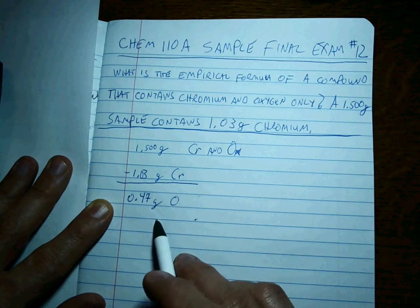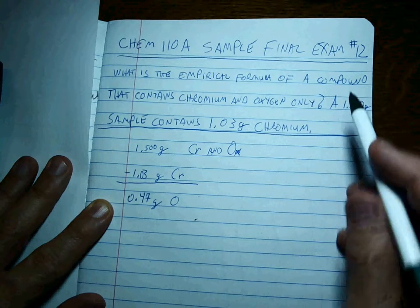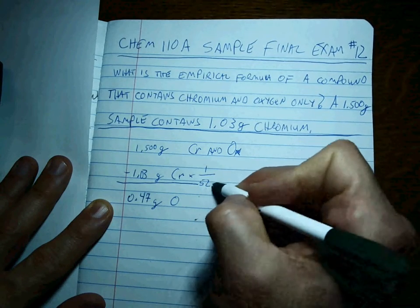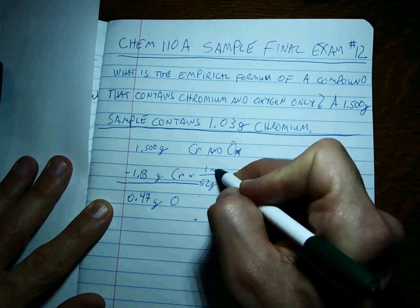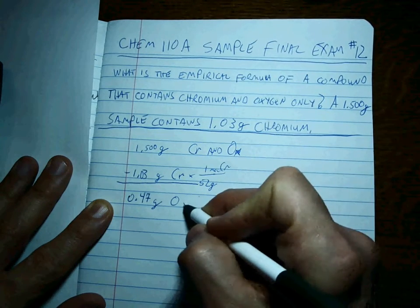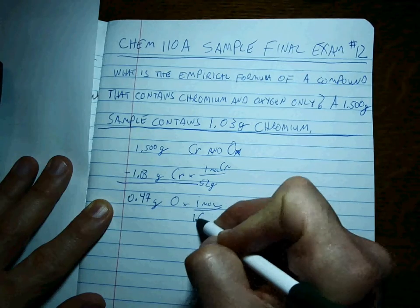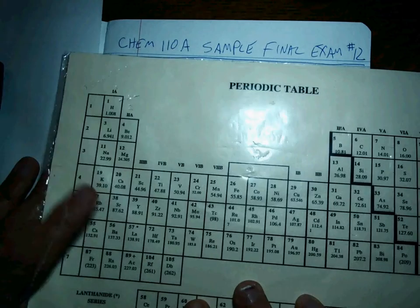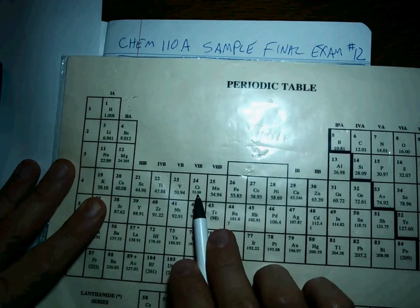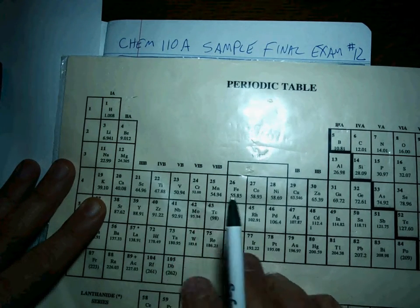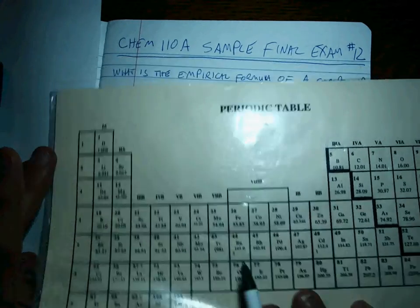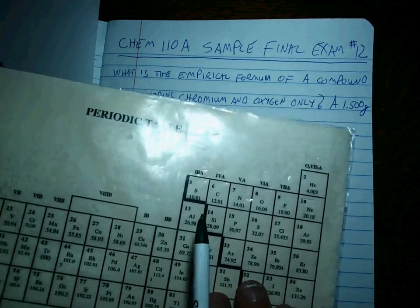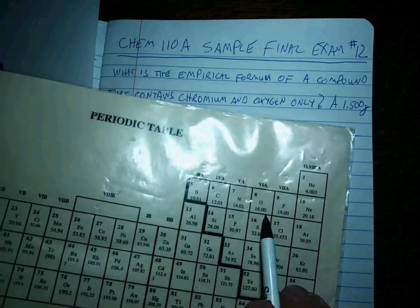And once we know the masses of each, it's real easy to get the empirical formula. You just multiply by 1 over the molar mass for each — 1 mole over 16 grams for oxygen. And real quick look: there's chromium, element number 24, with a molar mass of 52 grams per 1 mole. And oxygen is 16 grams per 1 mole.